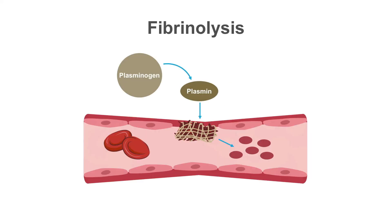To remind you, fibrinolysis is of two types: primary fibrinolysis, which is a cause of increased bleeding, and secondary fibrinolysis, which happens after normal clotting.